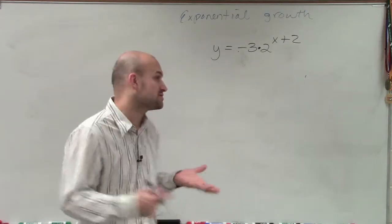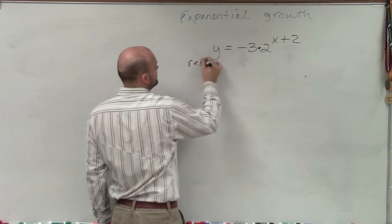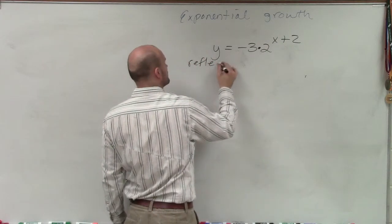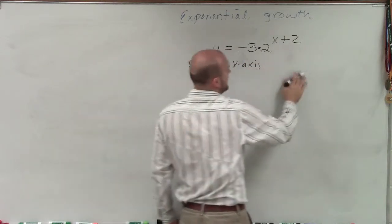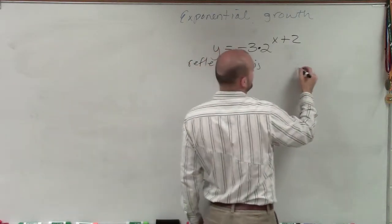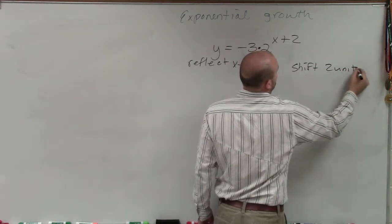And by applying our transformations, we notice there's two different transformations here. We have a negative 3, so that's going to tell us to reflect our x-axis. And there also, we have an h, which is positive 2. So therefore, we're going to shift two units left.